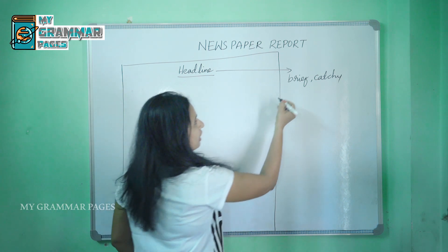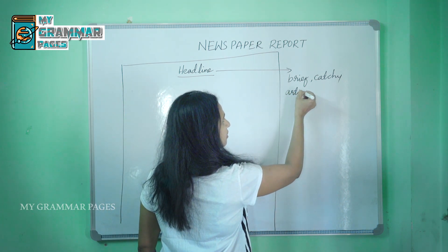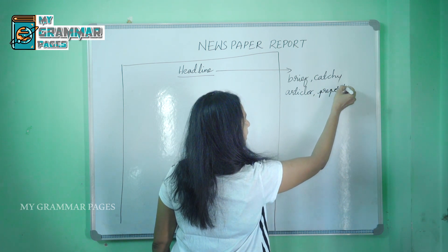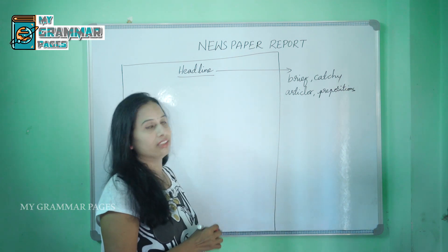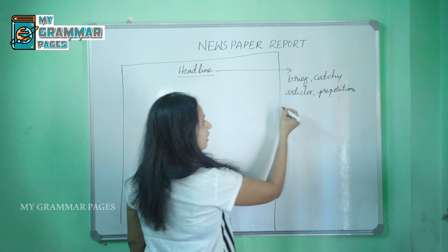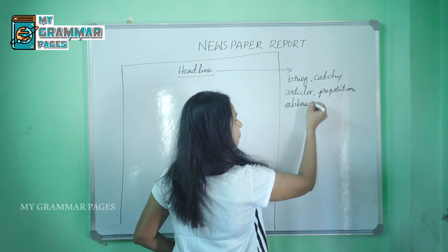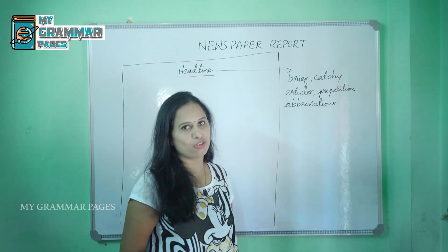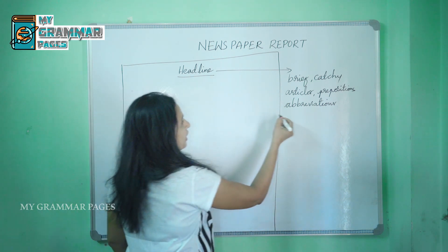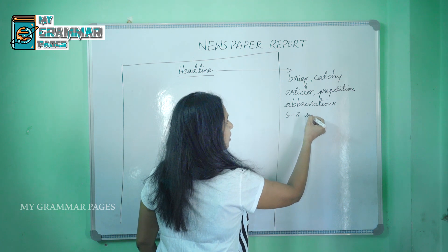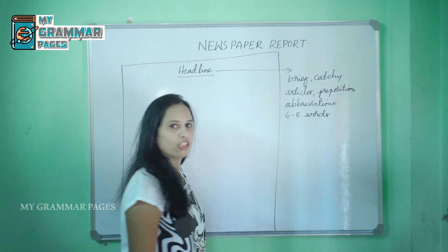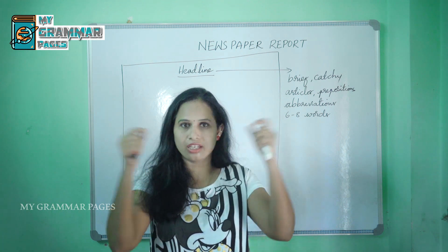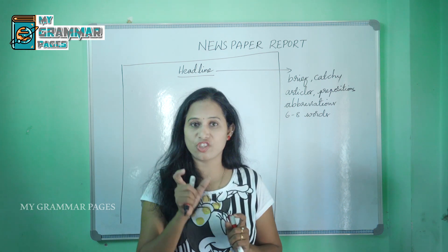The main thing to remember is that you can omit articles as well as prepositions wherever they are not required in writing the headline. You can use abbreviations and shortened forms of words. Coming to the word limit, the headline has to be written in six to eight words, not exceeding that. It will be very catchy and very brief.